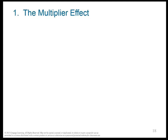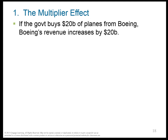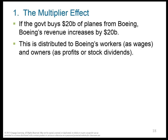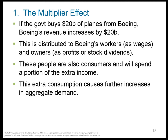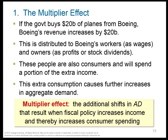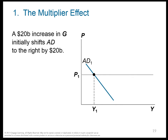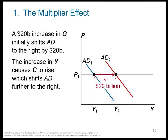Fiscal policy has two effects on the aggregate demand curve. The first is the multiplier effect. Imagine the government buys $20 billion of planes from Boeing — Boeing's revenue goes up by $20 billion and aggregate demand shifts $20 billion to the right. But then that $20 billion is distributed to Boeing's workers and owners, who start spending more money, making C go up, which pushes the AD curve to the right even further — an increase in aggregate demand of more than $20 billion. This is the multiplier effect: the AD curve keeps shifting right not just from government spending, but because of the extra consumption it triggers.